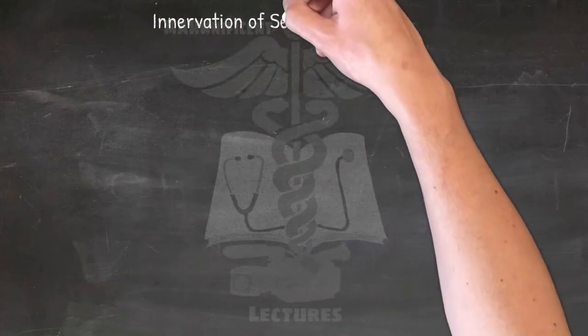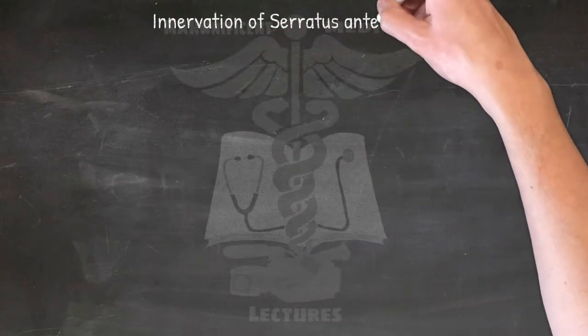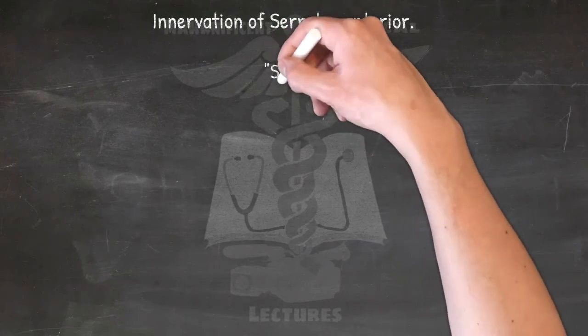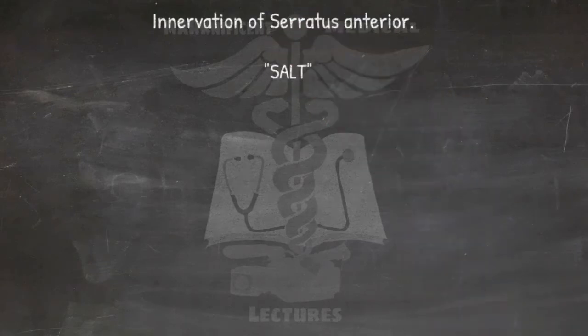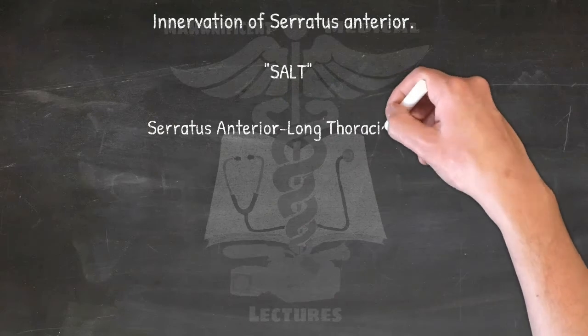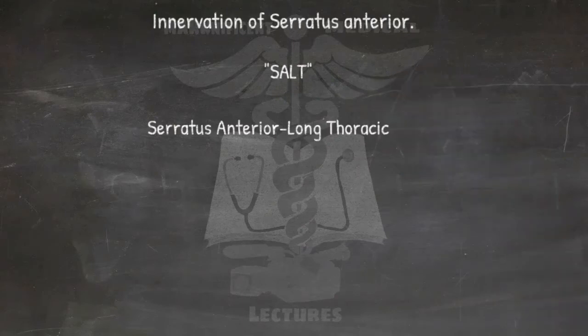For the innervation of serratus anterior, remember: SALT. Serratus anterior is innervated by the long thoracic nerve.